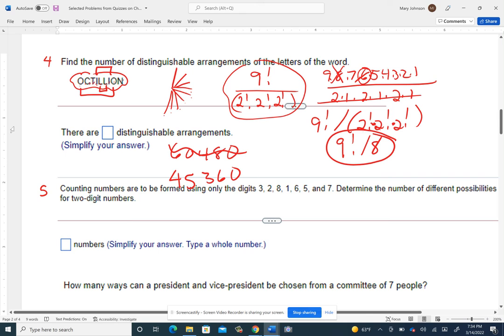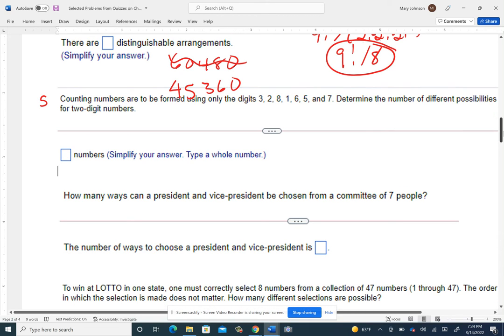Now, problem number five is the problem on the quiz that had you look at the counting numbers that are being formed using only these digits and determine the number of different possibilities for two digit numbers. So that would make a good one to use a product table on. So I'm going to put them in order one, two, three, five, six, seven, and eight. And one, two, three, five, six, seven, and eight. And it says the number of different possibilities. So like if I tried to come up with the numbers, it'd be 11, then 12, then 13, then 15, and so on. And when I come here and I use the two and the one to get 21, 21 and 12 are different. Order matters.